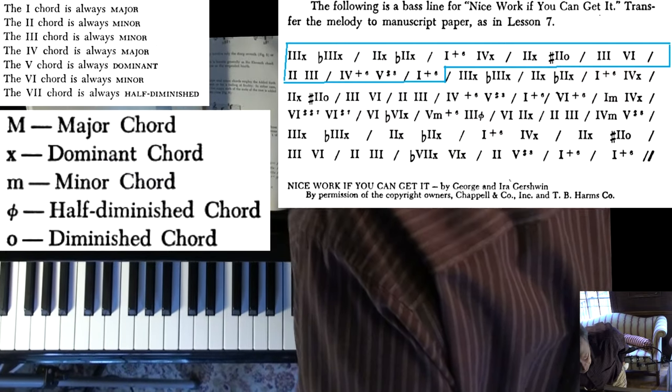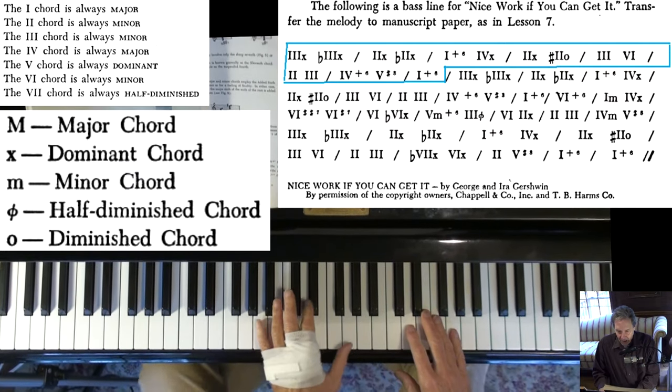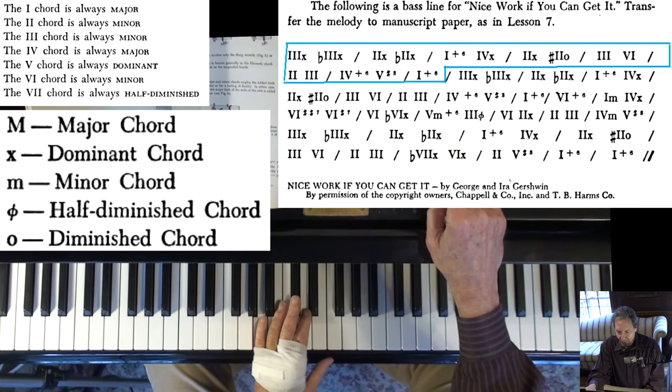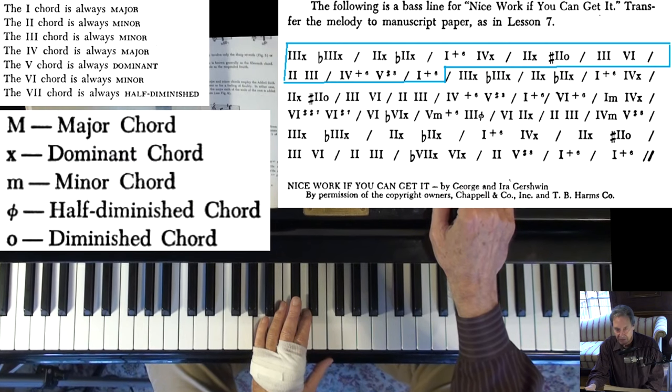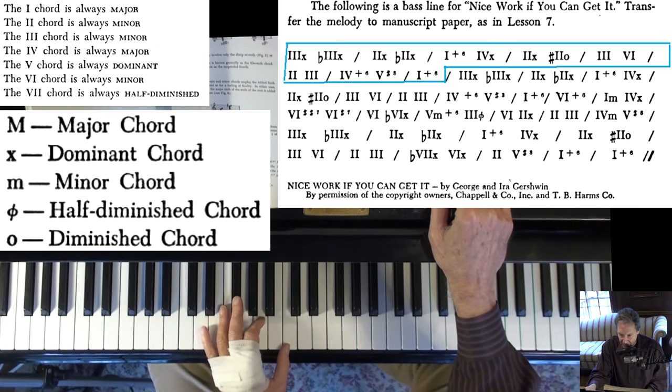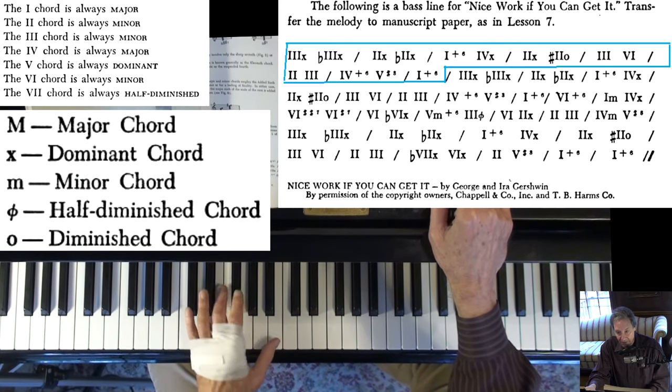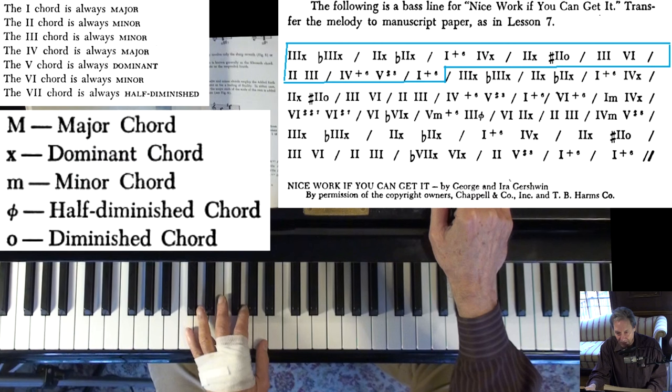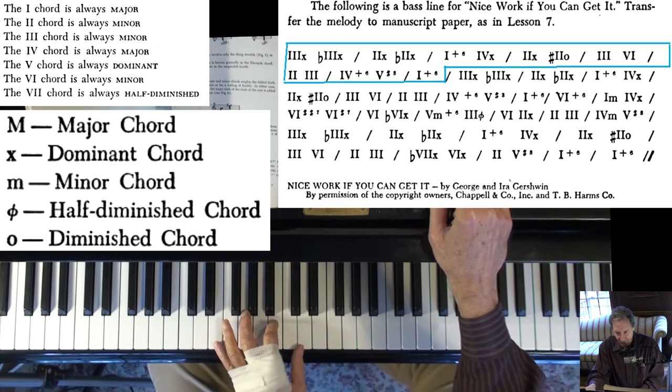The funny thing about volume one is you can't find a 2-5-1 in here to save your life. Everything that should be a 2-5-1, like here in the next measure, where it's a two dominant and then the flat two, uses that tritone substitution.